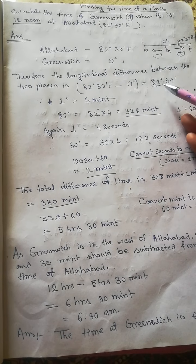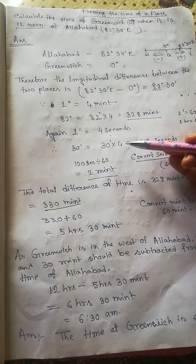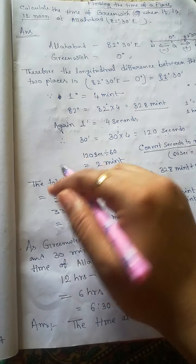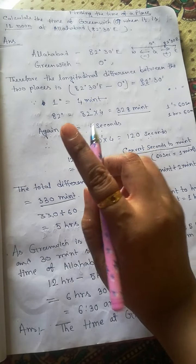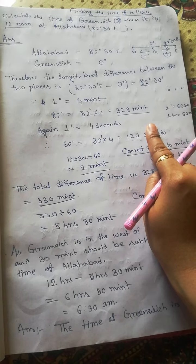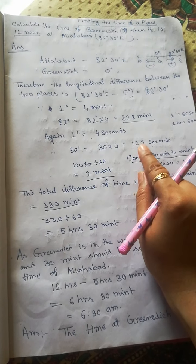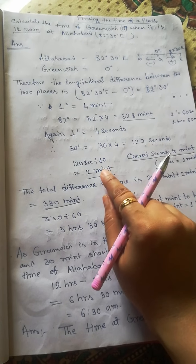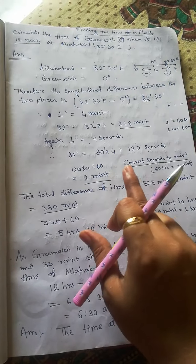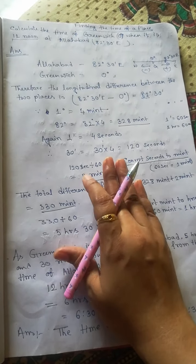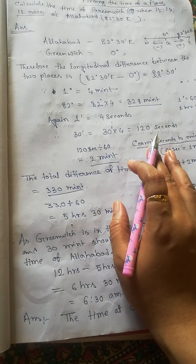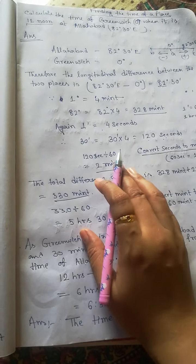Now we have degrees and minutes converted into minutes and seconds. The next step is converting into time. You know that 60 minutes equals one hour, so convert seconds into minutes by dividing 120 seconds by 60, which gives 2 minutes. Then add the 2 minutes to 328 minutes, giving a total time difference of 330 minutes. Converting 330 minutes into hours by dividing by 60 gives 5 hours 30 minutes.